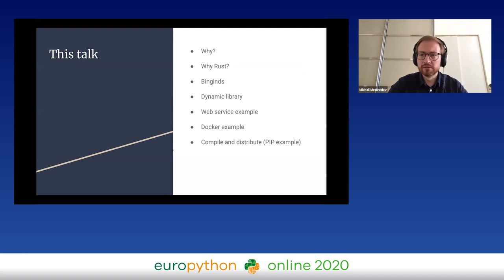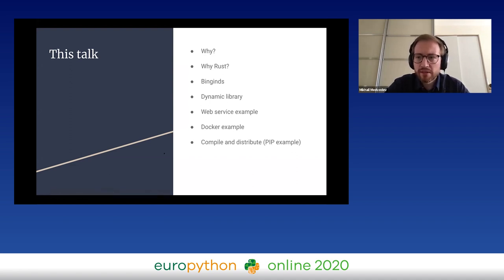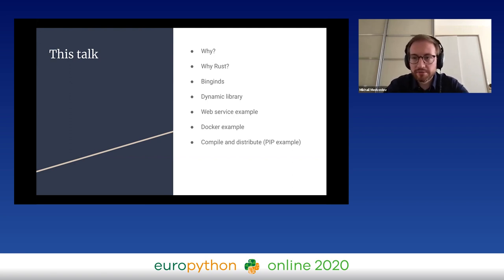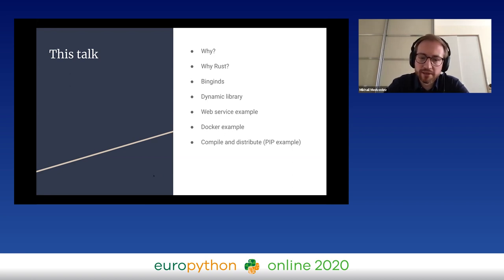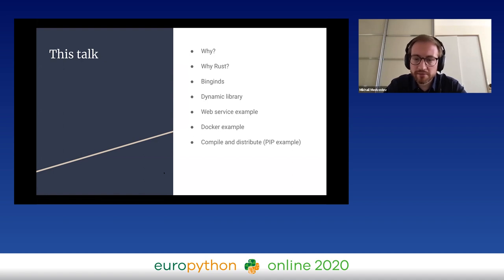Hi everyone, I am Mikhail and my talk is about how to extend Python using Rust. First I'm going to go through the reasoning for such a thing, then why Rust is a great choice for this task, then we'll go through some libraries that provide bindings from Rust to Python, then we'll switch to a demo and build a dynamic library that we can load into Python, then we'll build and run a simple web service example that uses both Rust and Python code, and we'll build and run it using Docker.